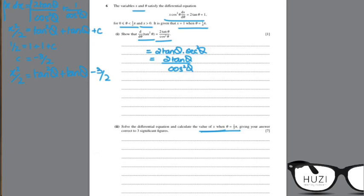Calculate the value of x when theta equals pi by 3. Since tan(pi/3) equals root 3, we get x squared upon 2 equals root 3 squared plus root 3 minus 3 upon 2, which is 3 plus root 3 minus 3 upon 2. Doing the algebra gives x equals 2.54.